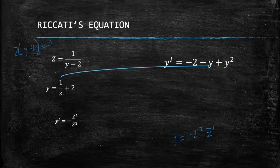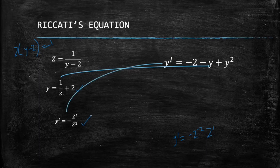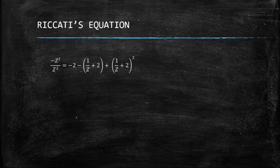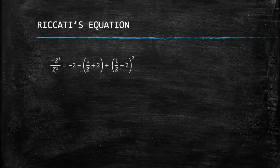Now we substitute into the original equation. Wherever we see y, we put in (1/z + 2), and wherever we see y', we put in (-z'/z²). We also need to handle y², which means expanding (1/z + 2)².